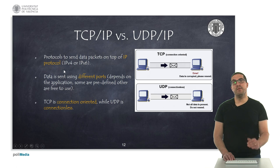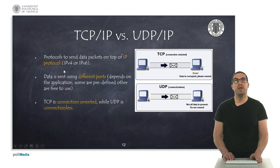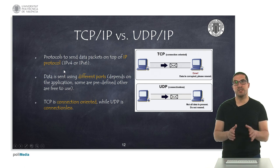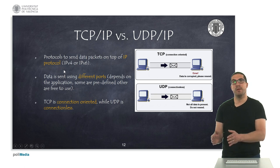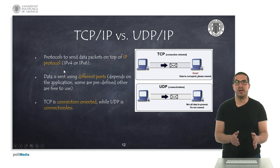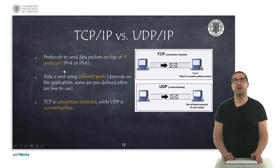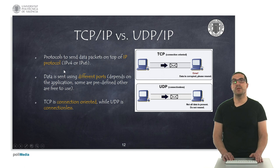At the transport protocol layer we have TCP/IP and UDP/IP. These are two different protocols. TCP/IP splits the whole message into small packages and expects a response back, while UDP just sends the message without waiting for a response. UDP is generally much faster and is used for applications like online gaming.